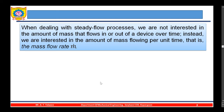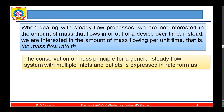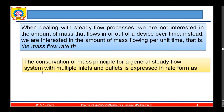When dealing with steady flow processes, we are not interested in the total amount of mass that flows in or out of a device over time. Instead, we are interested in the mass flow rate m_dot. The conservation of mass for a general steady flow system with multiple inlets and outlets is expressed in rate form as: the summation of mass flow rates entering equals the summation of mass flow rates leaving, in kg per second.